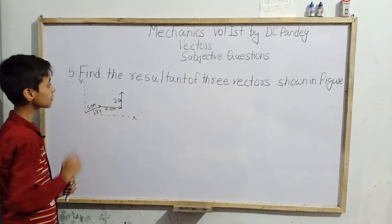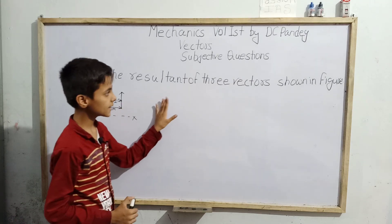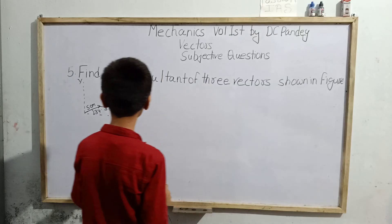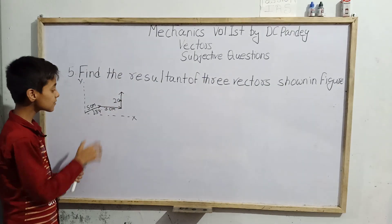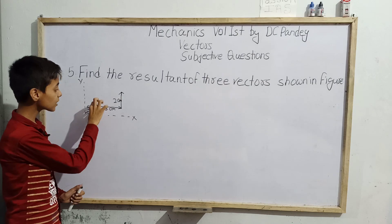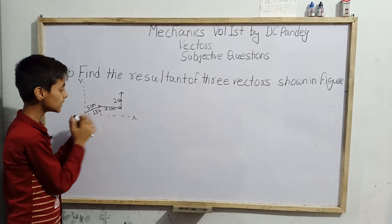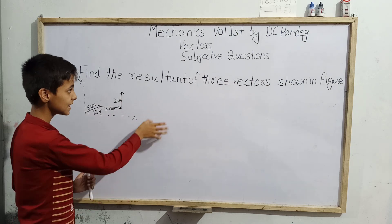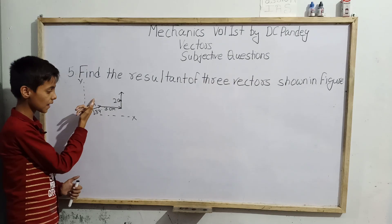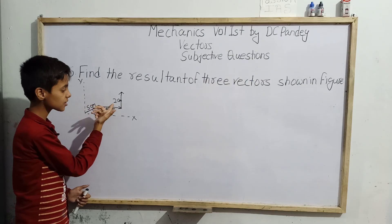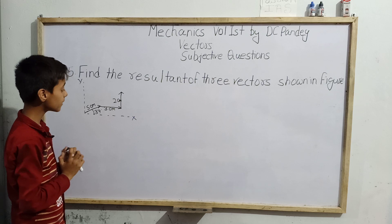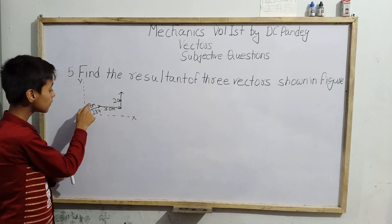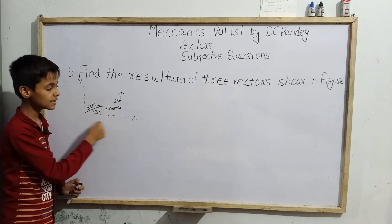We'll solve question number five: find the resultant of the three vectors shown in the figure. In this figure we have three vectors, and their resultant means we have to add them — whatever magnitude we get will be our resultant. Here we have one vector of five meters, one of three meters, and one of two meters. We have to add five meters, three meters, and two meters. The five-meter vector is making an angle of 37 degrees with the x-axis.